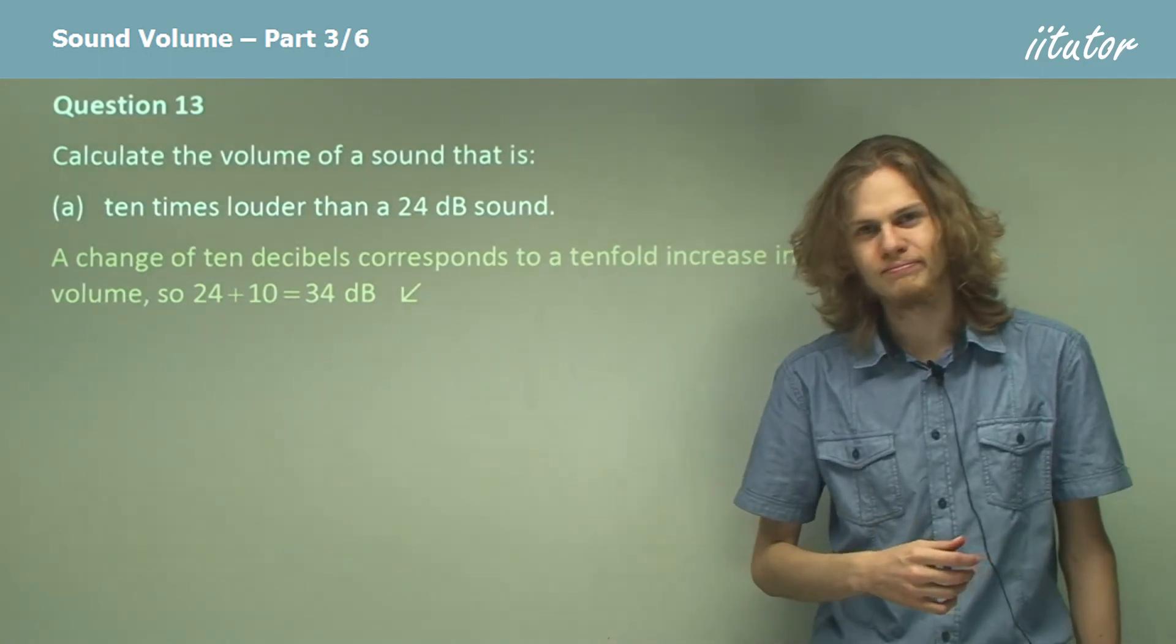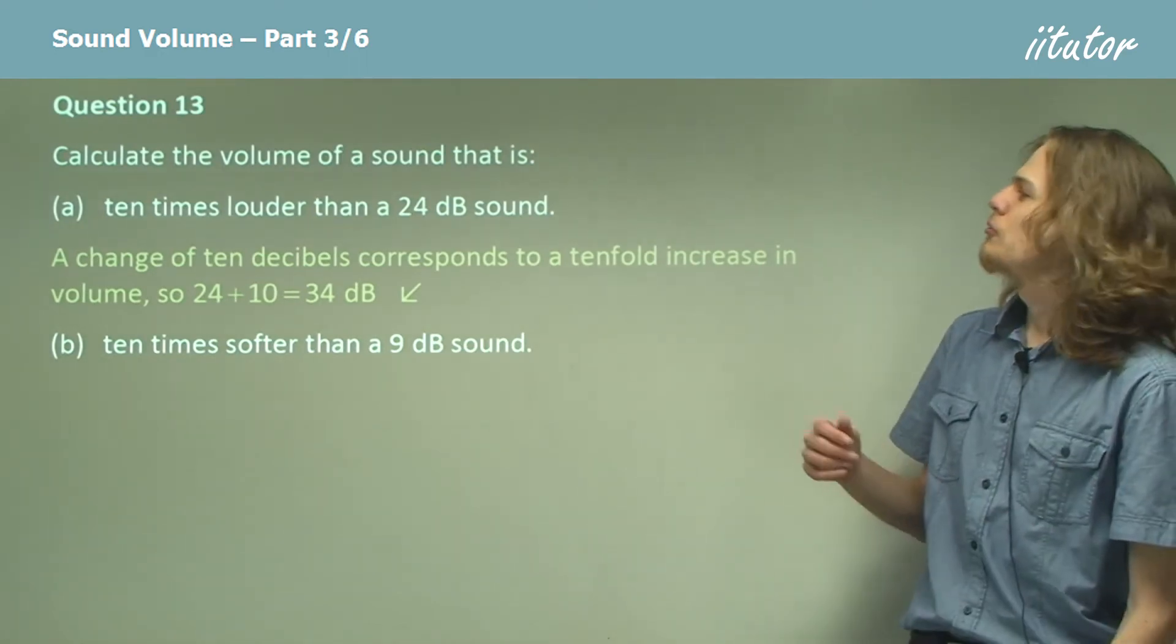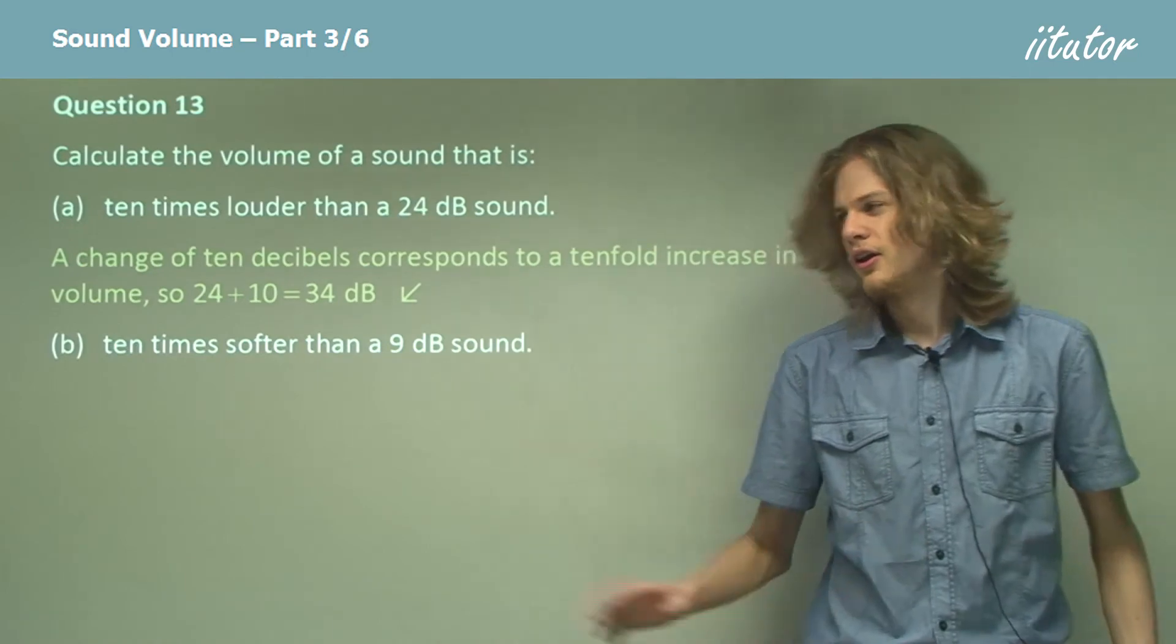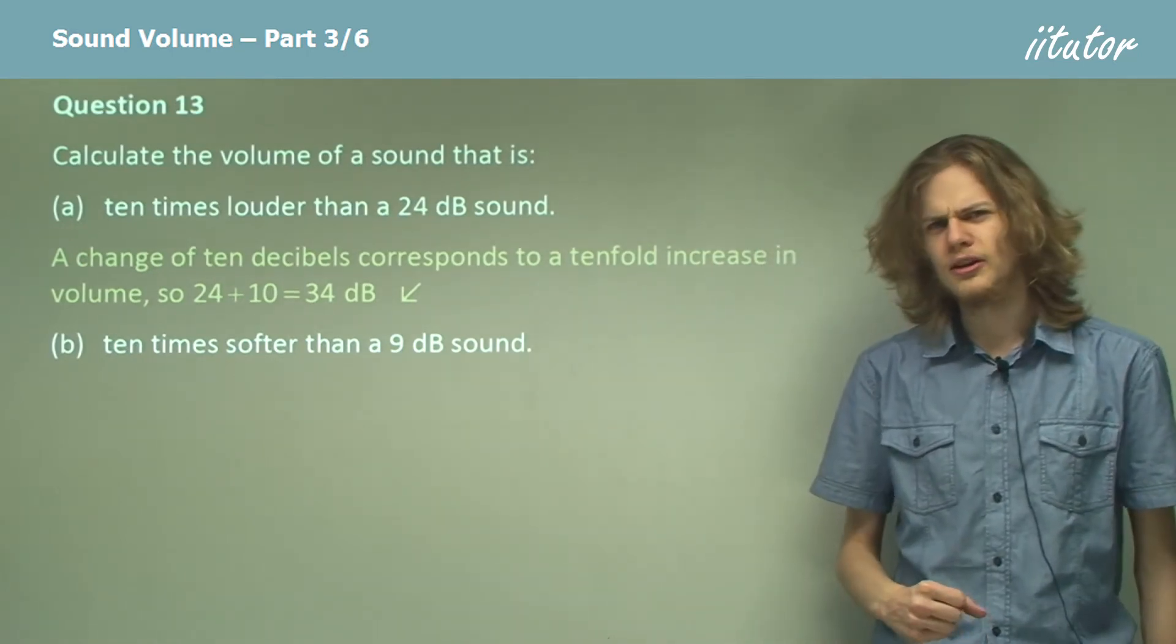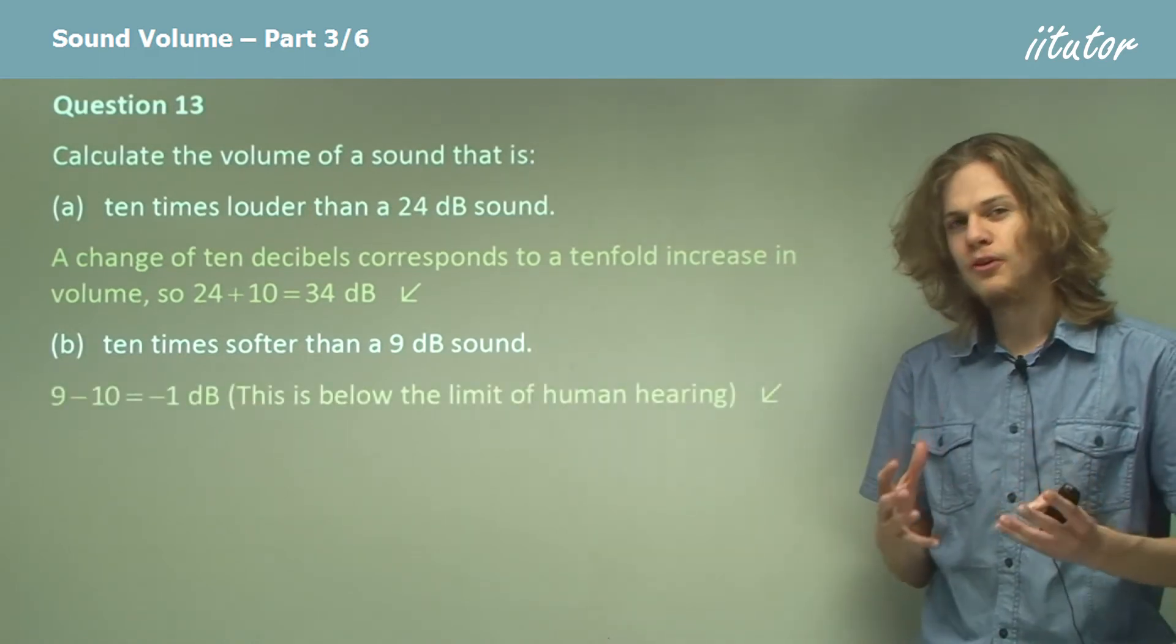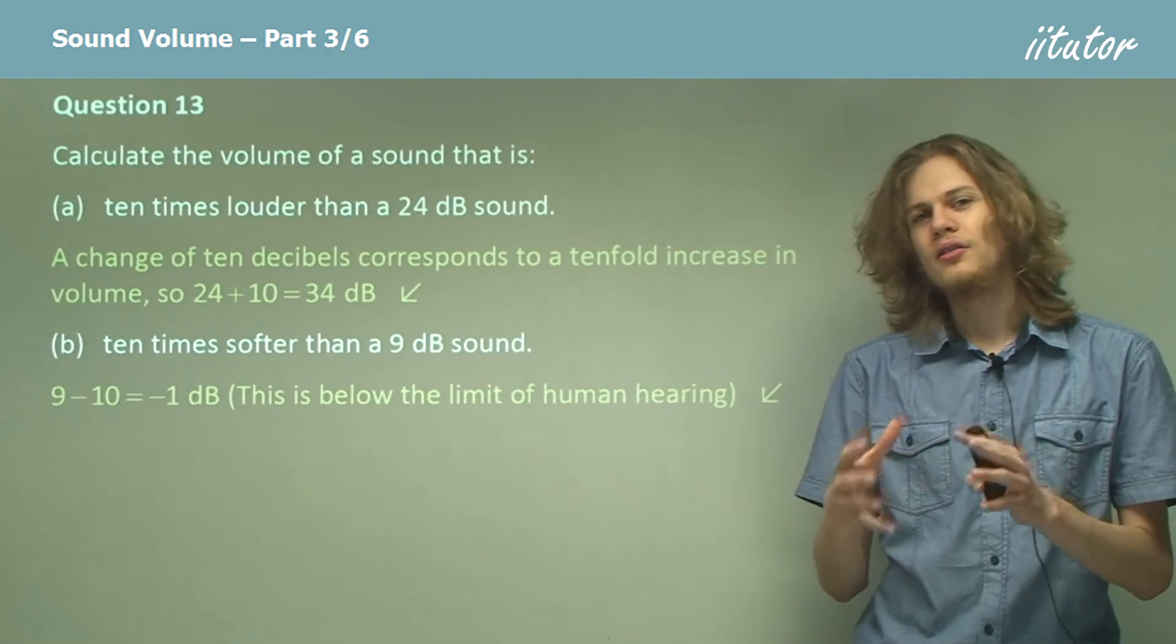How about 10 times softer than a 9 decibel sound? Well, if we want to get 10 times softer, all we need to do is subtract 10 decibels, right? So 9 minus 10 is - oh dear, we've got a negative number.